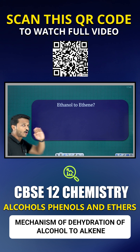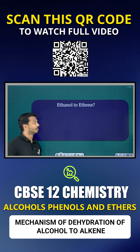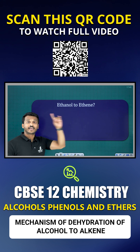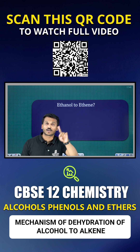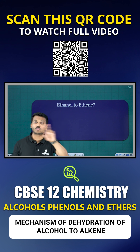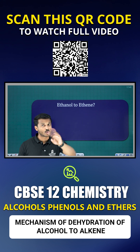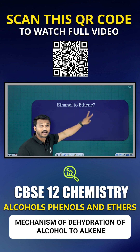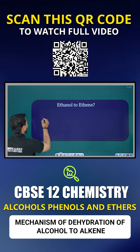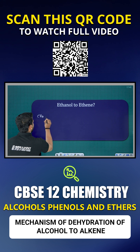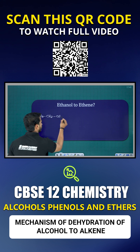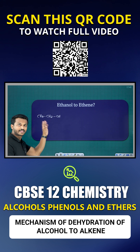So what overall happens here is ethanol to ethene. In the first lecture we already studied converting ethene to ethanol — this is the opposite: ethanol to ethene. Ethanol, as you know, is CH3CH2OH.